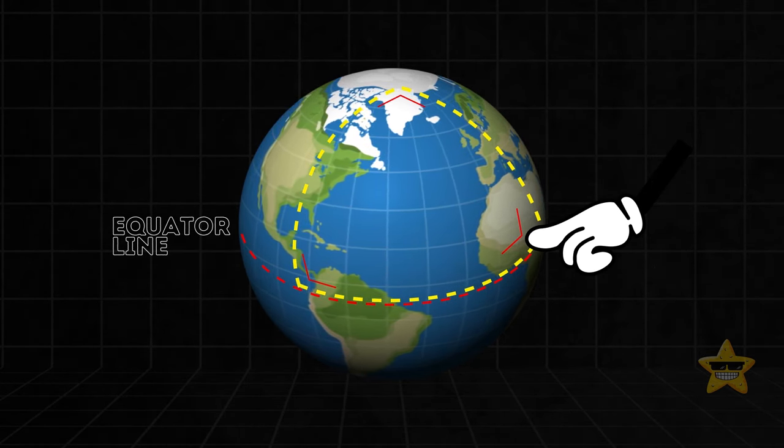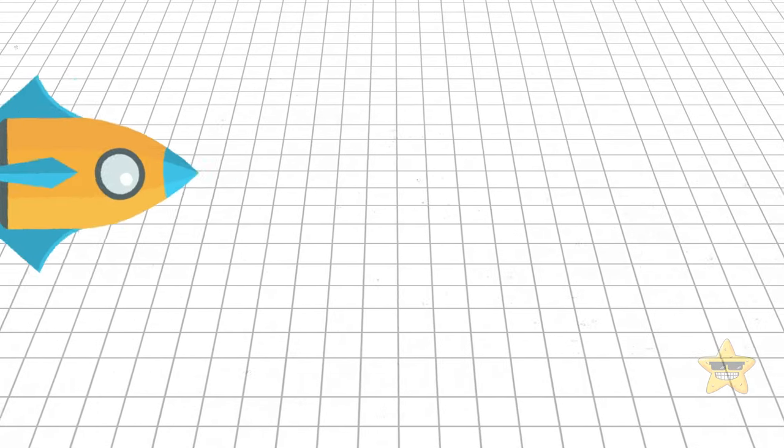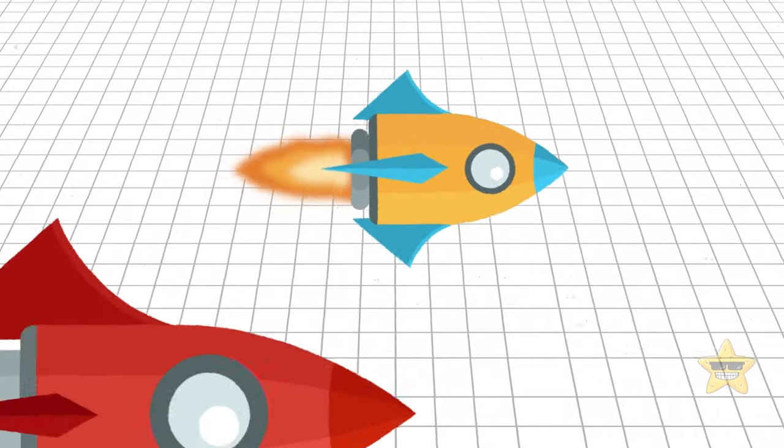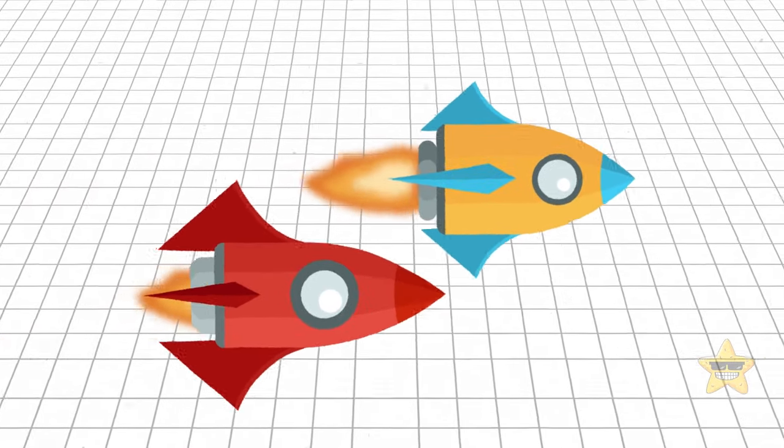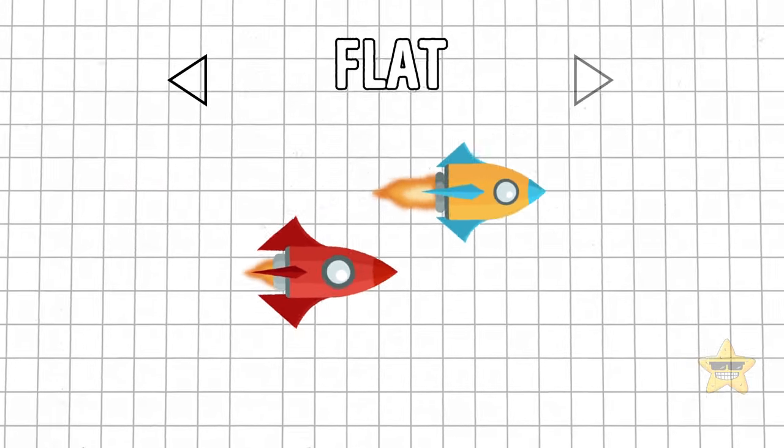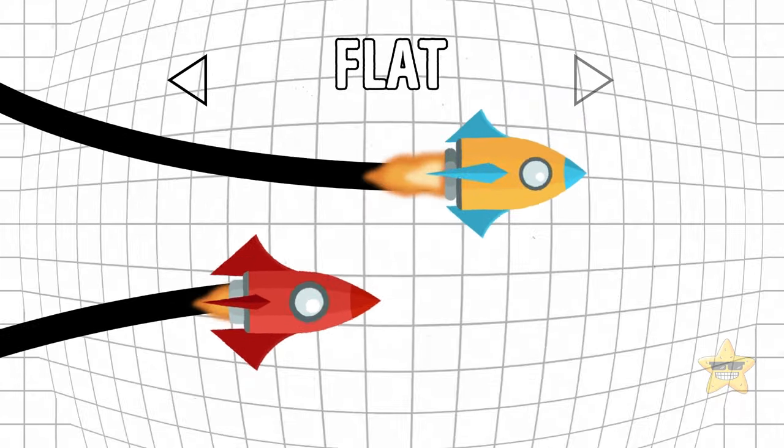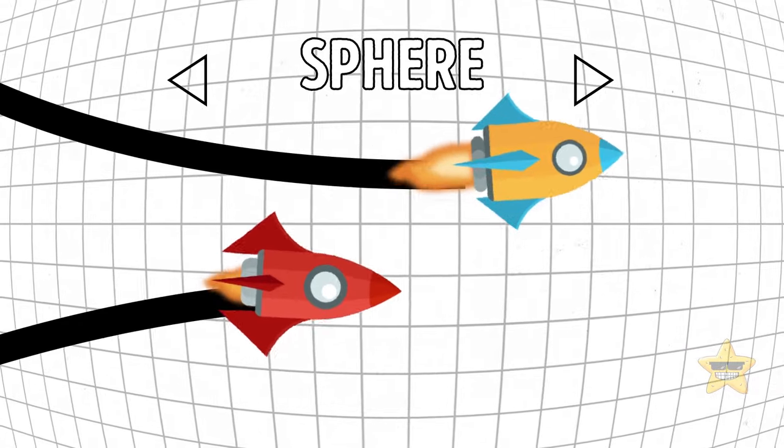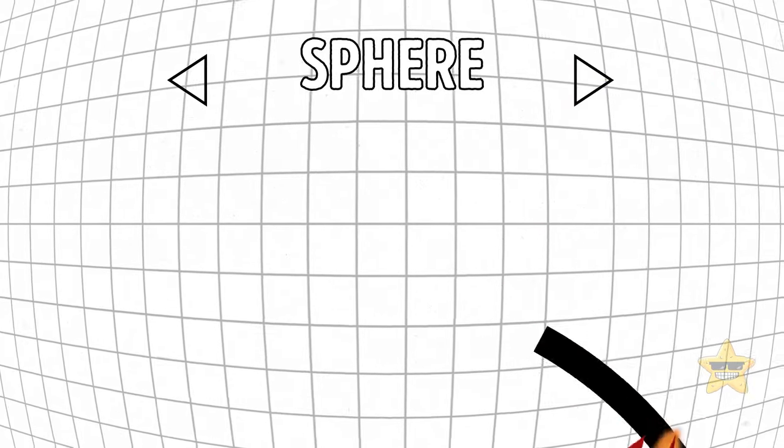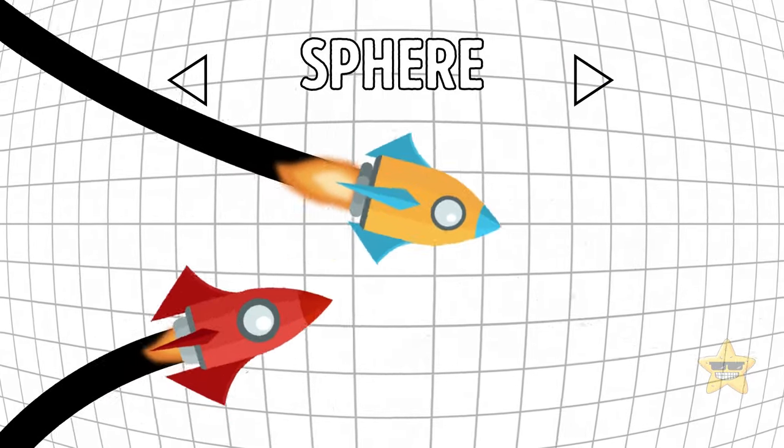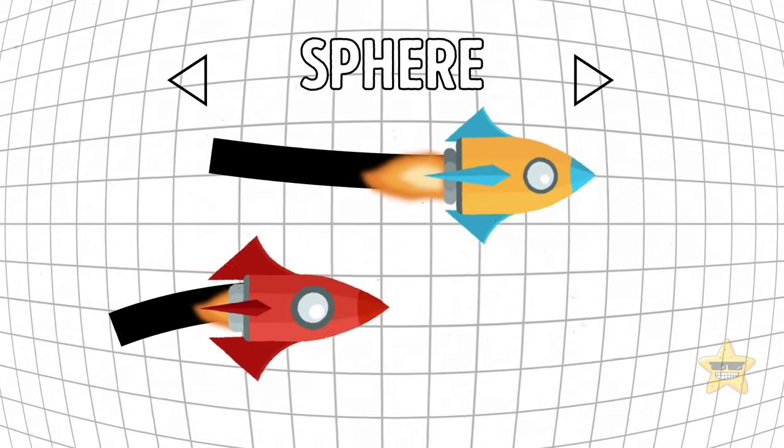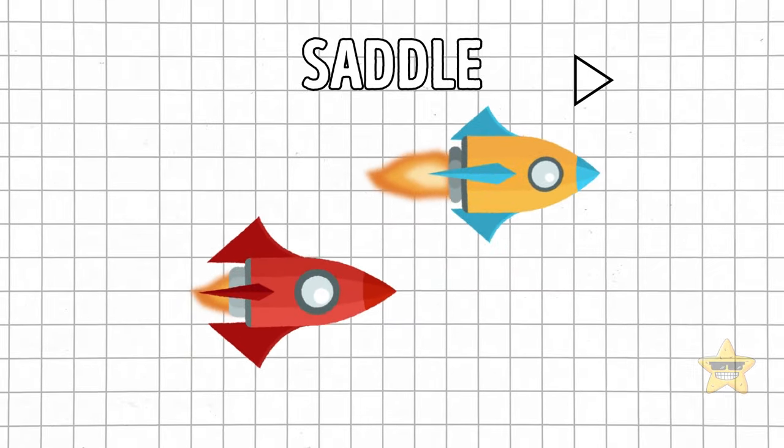Still struggling to understand? Here's another way to picture it. In a flat universe, two rockets traveling side by side will always remain parallel. This is in contrast to a closed universe, where the rockets will travel along the curve of space and eventually meet where they started. In an open universe with negative curvature, the rockets will gradually drift apart and never cross paths again.